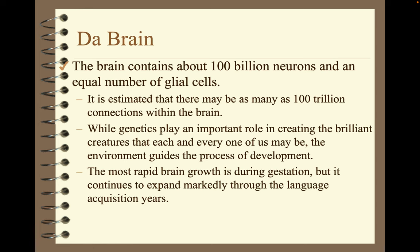The brain contains about 100 billion neurons and an equal number of glial cells. It's estimated that there may be as many as 100 trillion connections within the brain. While genetics play an important role in creating the brilliant creatures that each of us may be, the environment guides development. The most rapid brain growth is during gestation, but it continues to expand markedly through the language acquisition years.